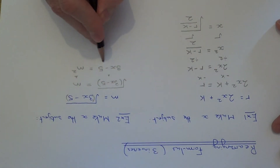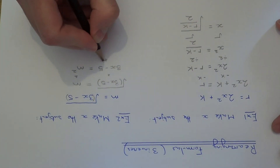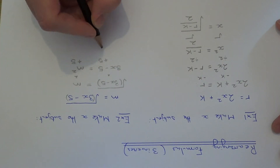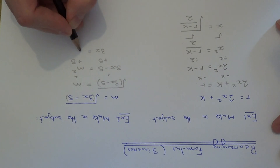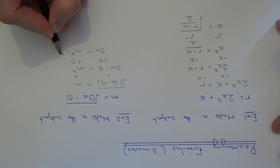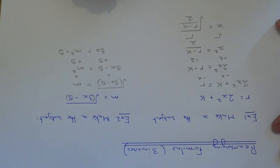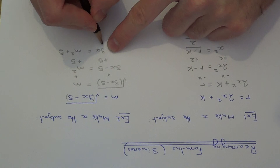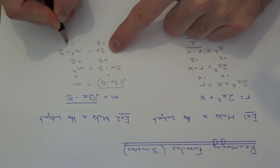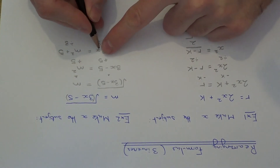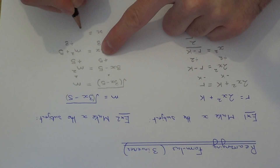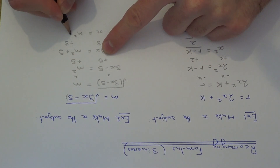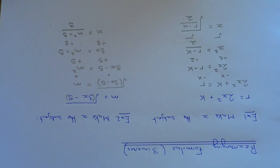The next thing we need to get rid of is the minus 5. We can do this by adding 5 to both sides, which gives us 3x equals m squared plus 5. We've only got one number to get rid of now, and that's the times 3, so we divide by 3 on both sides. That gives us an answer of x equals m squared plus 5 divided by 3. Thanks for watching.